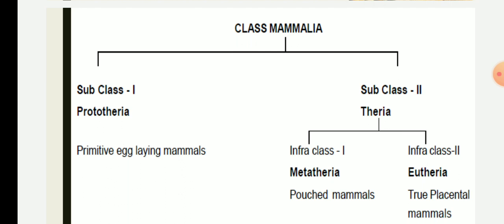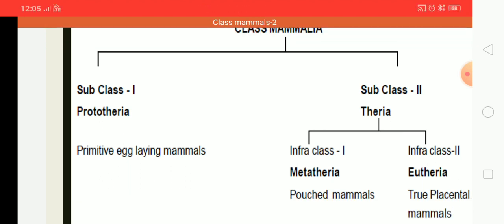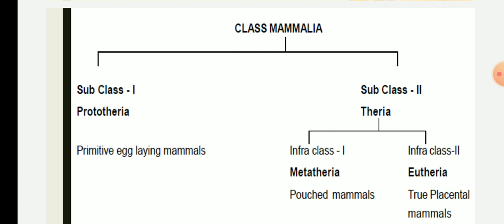Subclass one, Prototheria, are referred to as primitive egg-laying mammals. Subclass Prototheria is further classified into order one, Monotremata. Whereas subclass two, Theria, is classified into infraclass Metatheria and Eutheria. In today's lecture we are going to see the characteristics of subclass Prototheria.